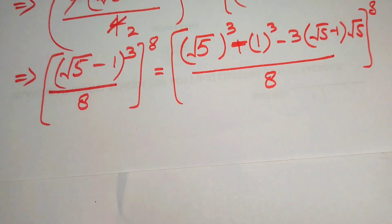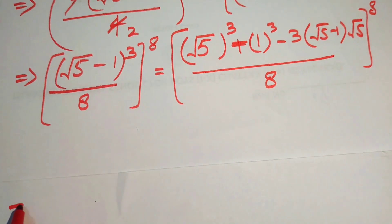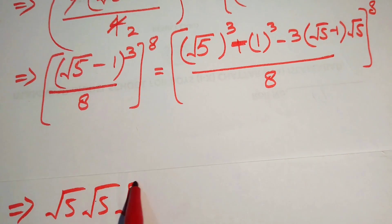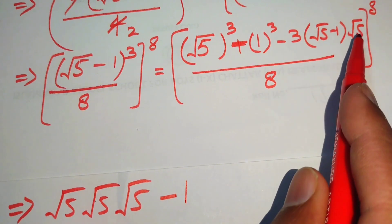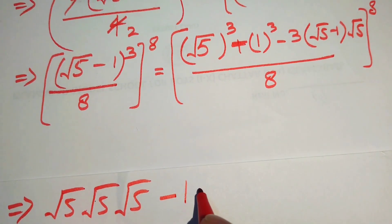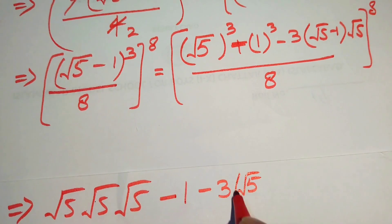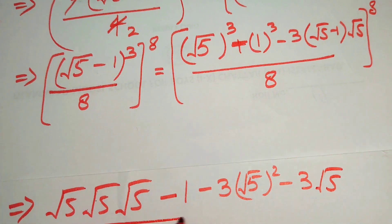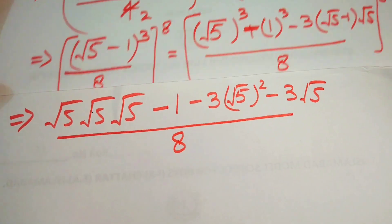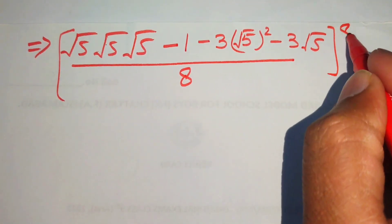Expanding (√5)³: that is √5 × √5 × √5. Then minus 1 cubed equals 1. We also get minus 3 times (√5)² minus 3 times √5, all divided by 8, and the whole exponent is 8.